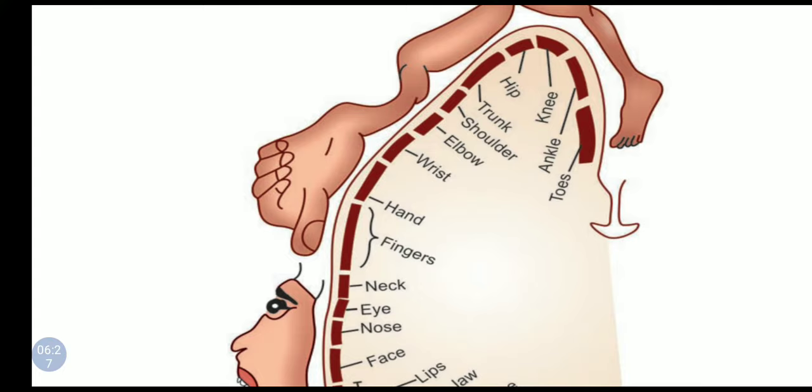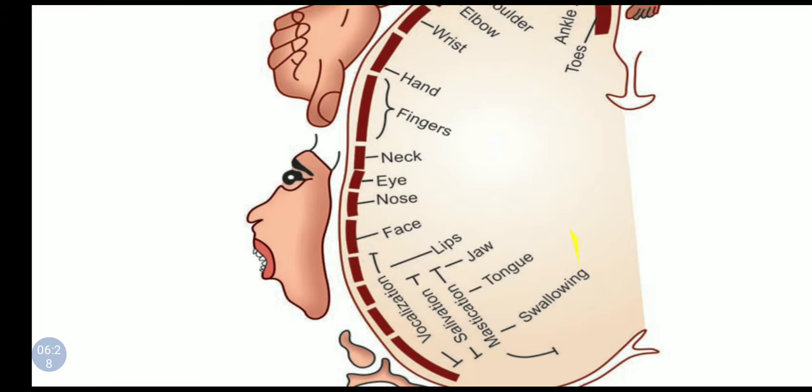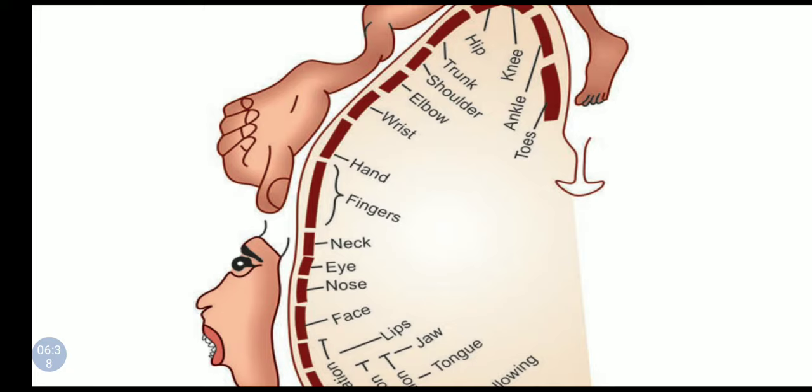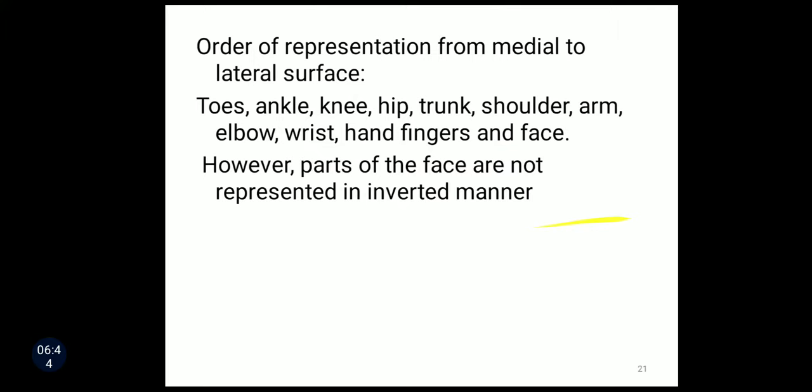You can see in area four all the muscles are represented: toes, ankle, knee, hip, trunk, shoulder, elbow, wrist, hand, fingers, neck, eye, nose, face, lips, jaw, tongue — all these things are represented here. Area number four is controlling the muscles of all parts of the body.